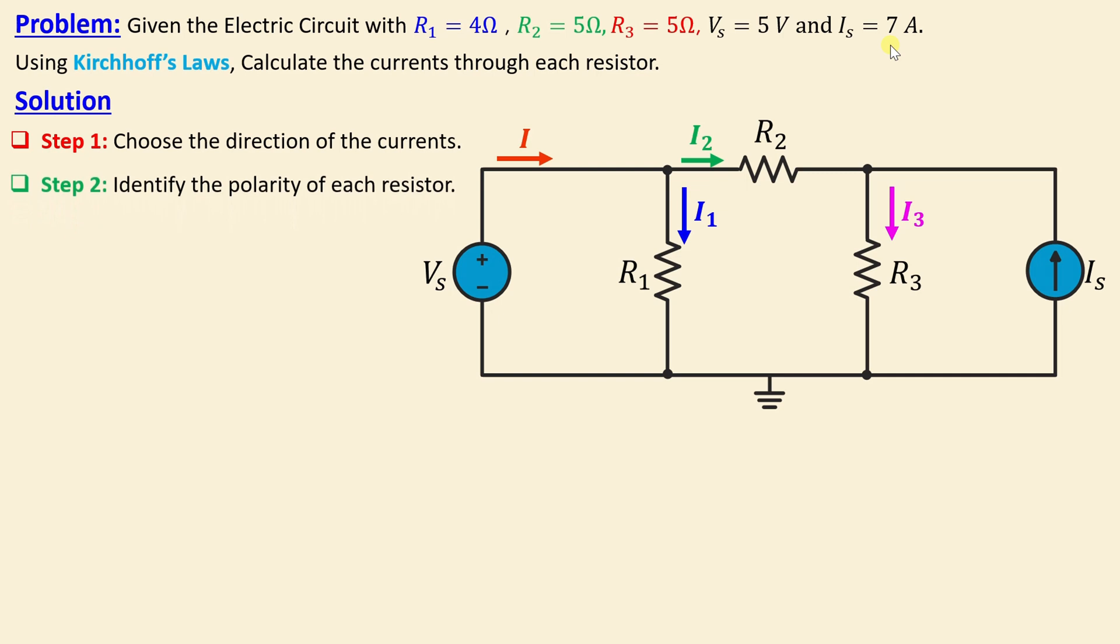we go to step number 2 is to identify the polarity of each resistor. We know that the current goes always from the high potential to the low potential. And that means this is positive and negative of R1, positive and negative of R2, positive and negative of R3.